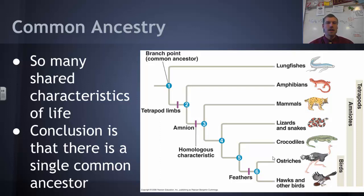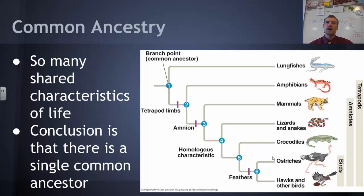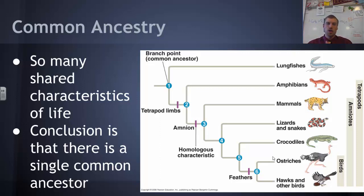Finally, common ancestry. This is a conclusion of evolution: life has a lot of shared characteristics, so there must have been at some point a single common ancestor for all of life — and many organisms share common ancestors along the way. Common ancestor doesn't mean that ancestor is still an extant species. Rather, those species have split apart and evolved in different ways. The ancestor used to exist but is no longer around, having gone extinct at some point.